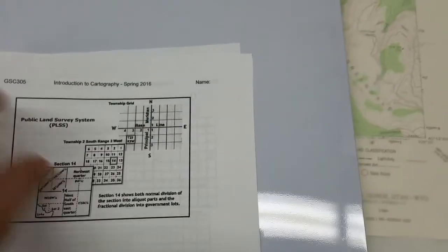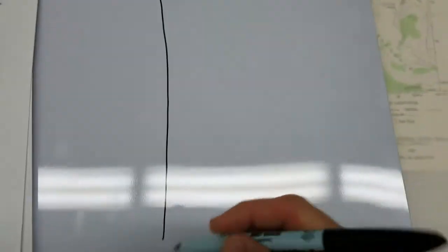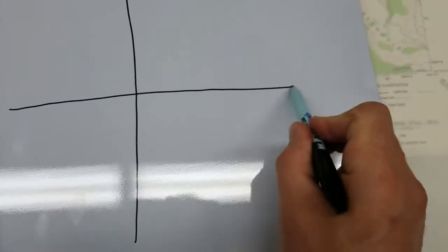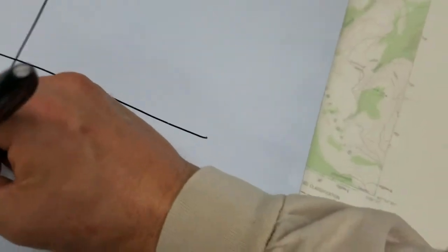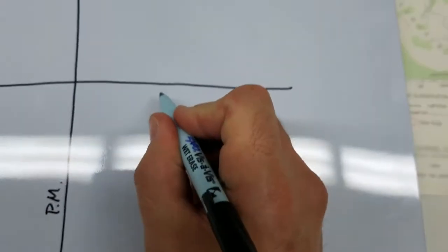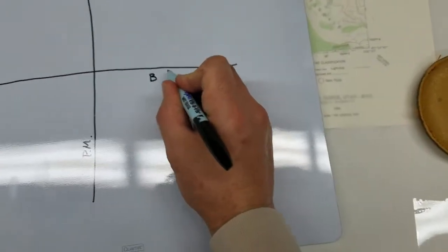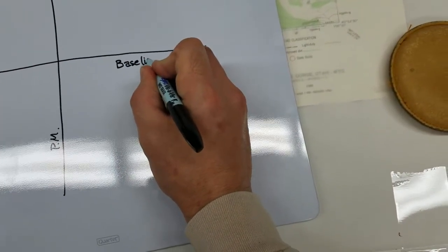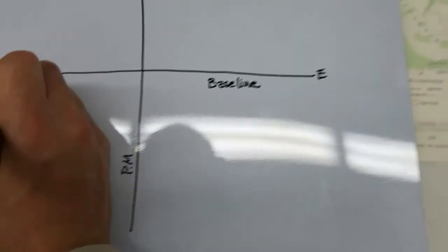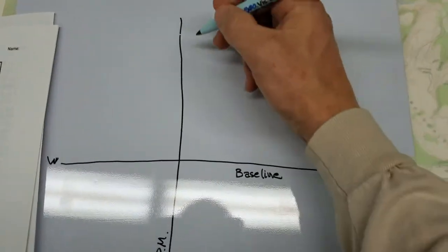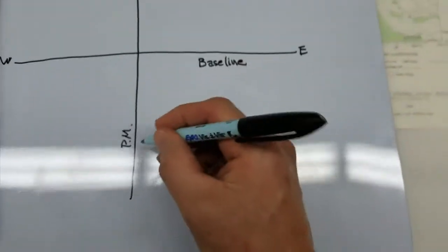So we have a principal meridian, and we have established some type of a survey line called a baseline. I'm going to draw this out. So here's my principal meridian running north-south, and here's my baseline running east-west, with east, west, north, and south labeled accordingly.